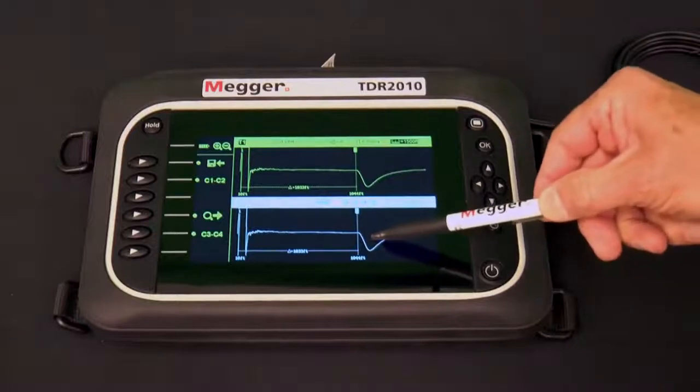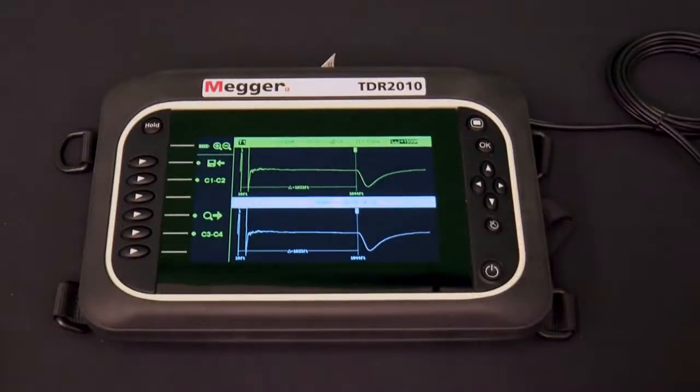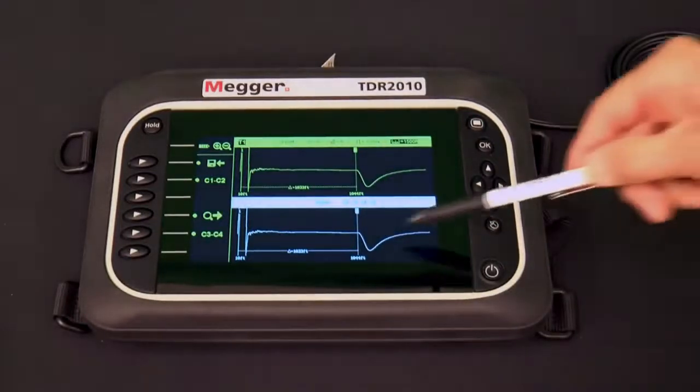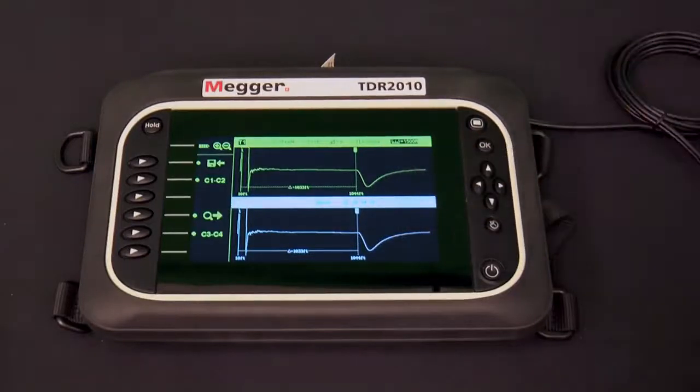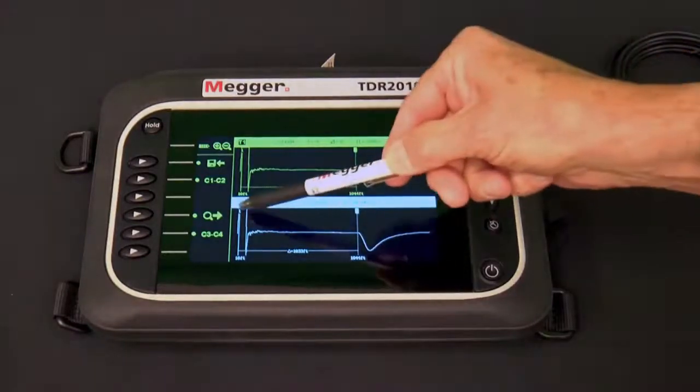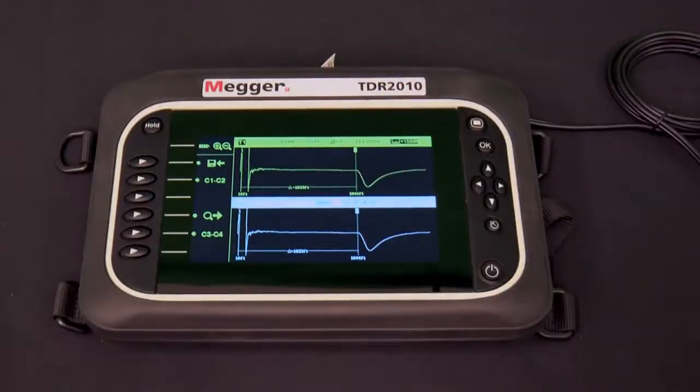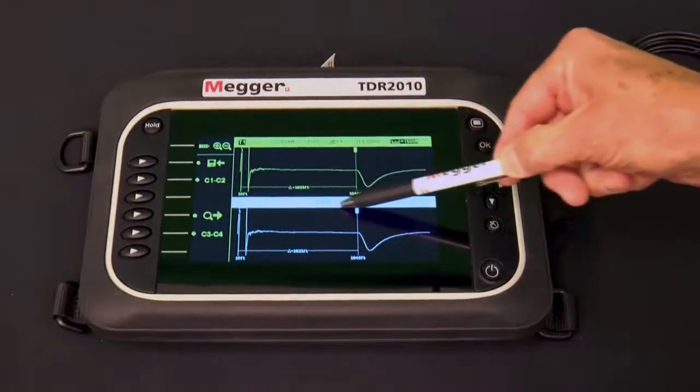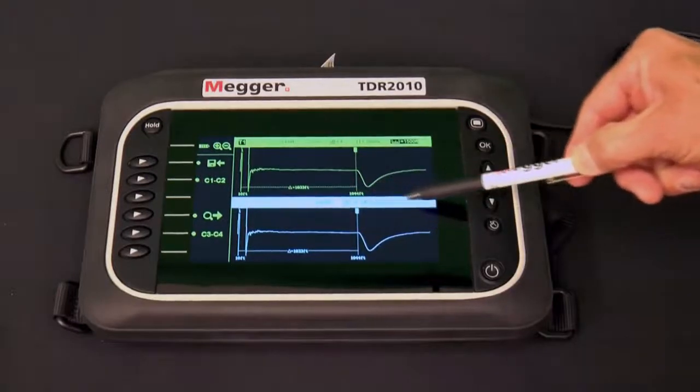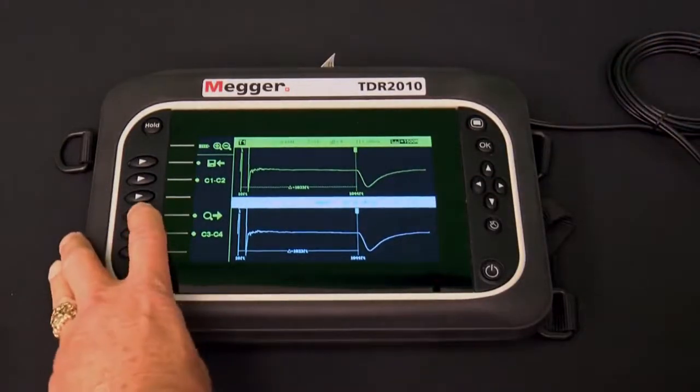Press this zoom soft key and the inactive trace, trace 2, disappears and in its place a duplicate of trace 1 appears. The zoom icon will change to a magnifying glass and a right pointing arrow. Along the top of this duplicate is a list of magnification levels from which we can choose.